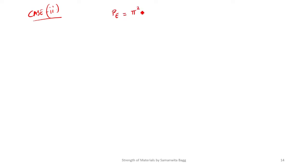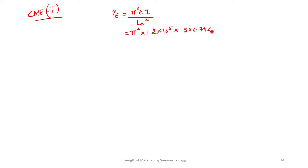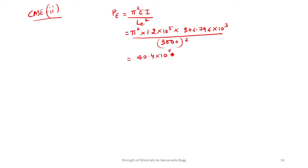For Case 2, using Euler's formula: PE = π²EI / LE². The value of E is 1.2 into 10⁵, I is 306.796 into 10³, and LE is 3000 mm (fixed-free condition). Solving gives PE = 40.4 into 10³ N.